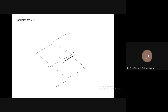Similar cases exist with the vertical plane. The line is now parallel to the vertical plane because both ends' distances are the same — the ends of this line are equidistant from the vertical plane. The line can also be perpendicular to the vertical plane: line AB is making an angle of 90 degrees with the vertical plane, so it becomes perpendicular to the vertical plane.